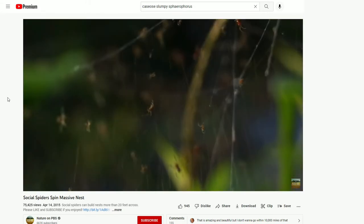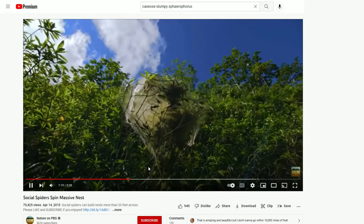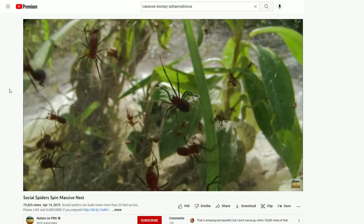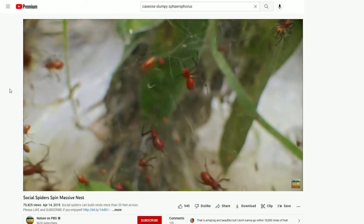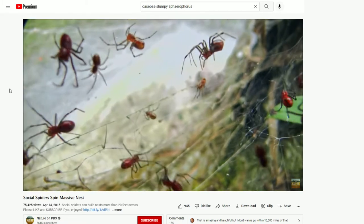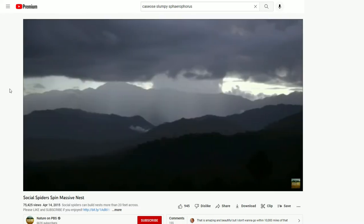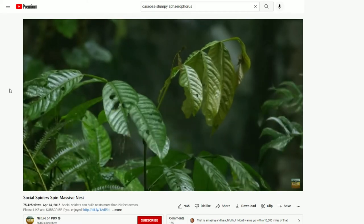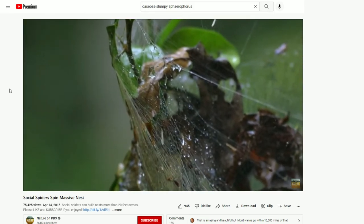But here in the rainforest, there are exceptions to that rule. Spiders that share big communal nests look like an ant colony. If you don't like spiders, you might not like this species. It's harmless to humans, but where you find one, you'll likely find a lot of them. They even have ant colors. Social spiders are a rare breed. Of nearly 40,000 spider species, only a couple dozen do this.